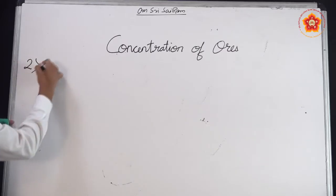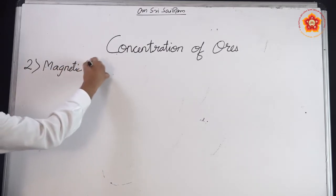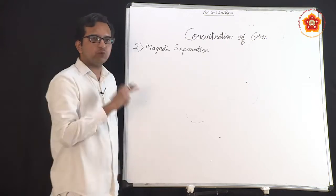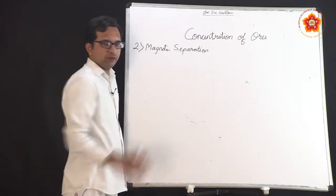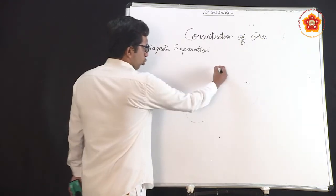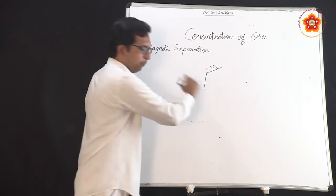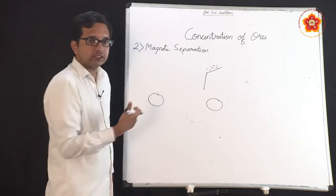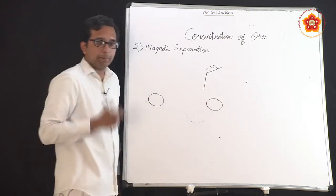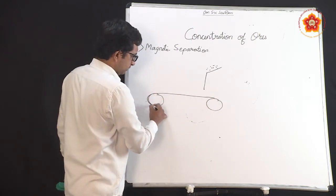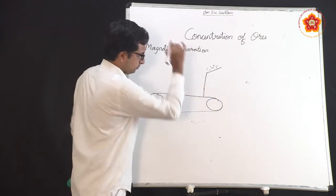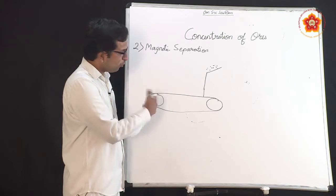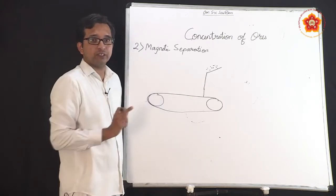The second method is magnetic separation. As the name suggests, this involves compounds that are magnetic in nature. The setup consists of two magnetized wheels connected by a conveyor belt — similar to what you see in flour mills — and ore particles are placed on this belt.